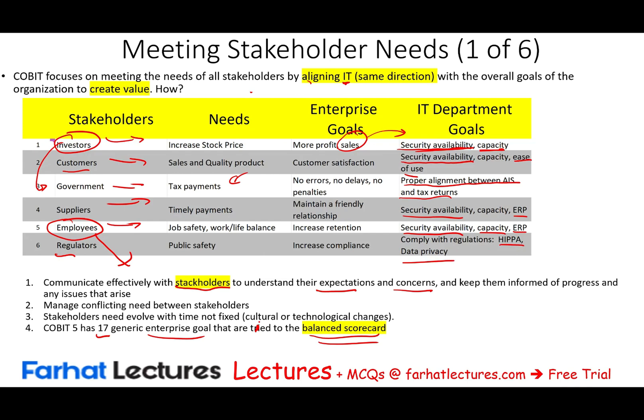The point of meeting stakeholder needs is that you have various stakeholders, and COBIT tries to align stakeholder needs with the overall goal. I showed you the needs of each stakeholder, the enterprise goal, and how the IT department uses that information. We have many stakeholders to worry about — this is one of the six principles.